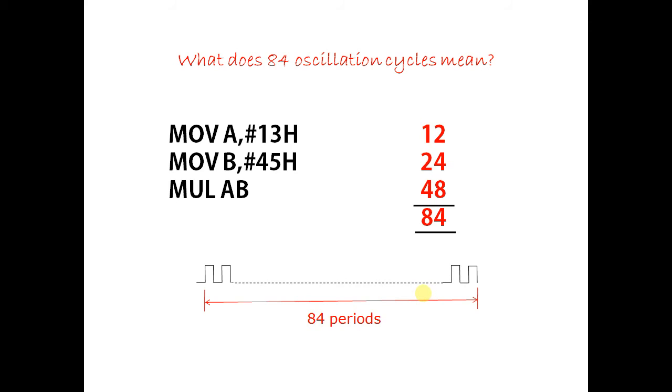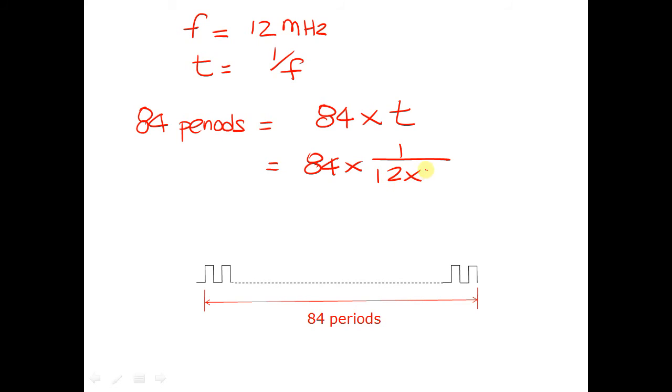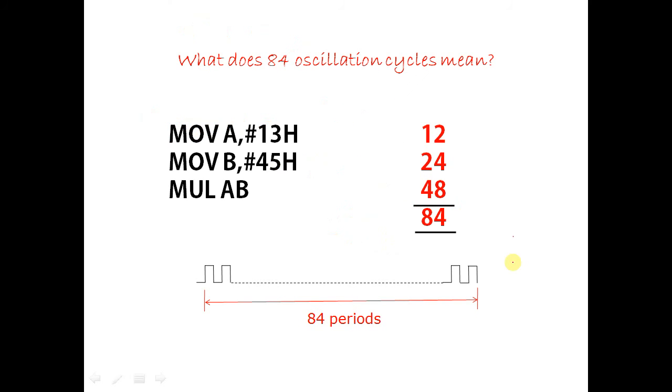So, how much time is that? The oscillation frequency is 12 megahertz. One period is one over frequency. The total time taken is 7 microseconds. These three instructions take a total of 7 microseconds to execute.